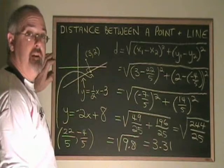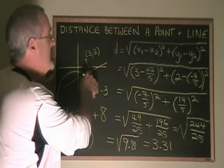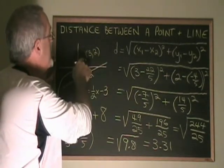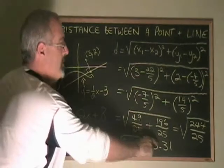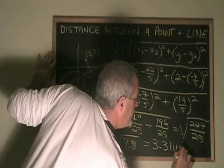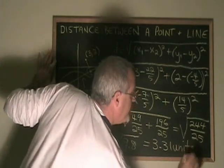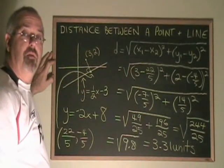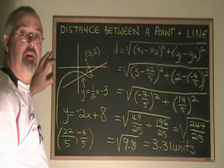Therefore, the distance between this point on the line and the point (3,2) is 3.31 units. This is how you find the distance between a point and a straight line.